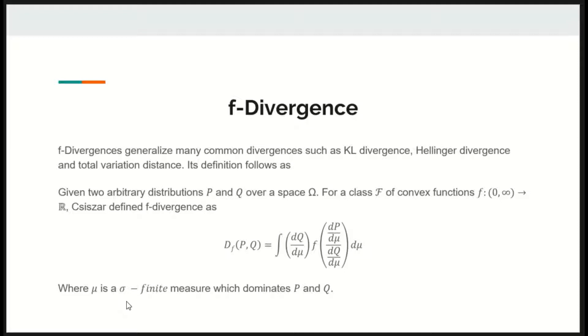Where nu is a sigma finite measure which dominates P and Q. So what is sigma finite measure and what do I mean by dominating a function?